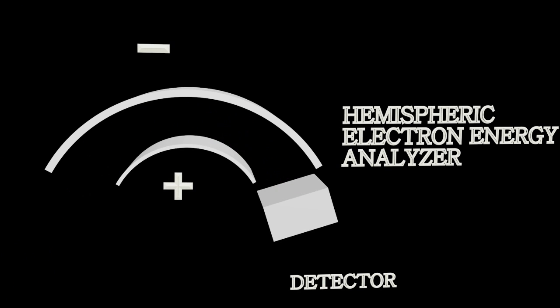Inside the analyzer, electrical potential is applied between the inner and outer wall. The inner part has a positive potential, so it attracts the negative electrons. The outer part has a negative potential, so it repels the negative electrons. Only electrons with specific energy can pass through the analyzer and reach the detector.